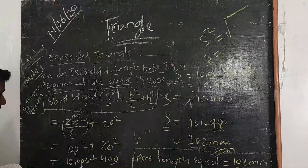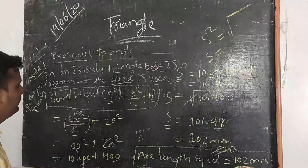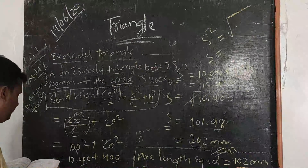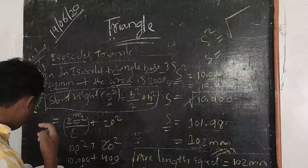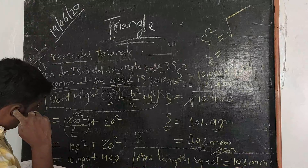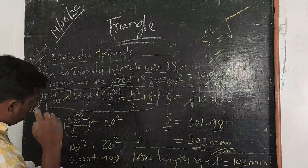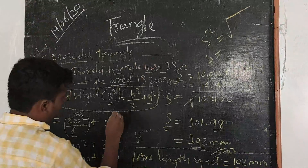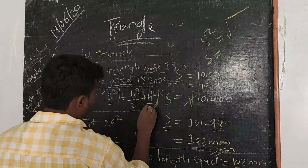1 divided by 2 into h. 1 divided by 2 into 1 divided by 2, and the value is HV.